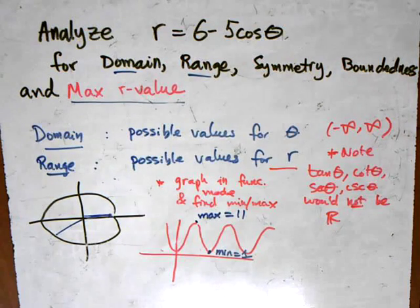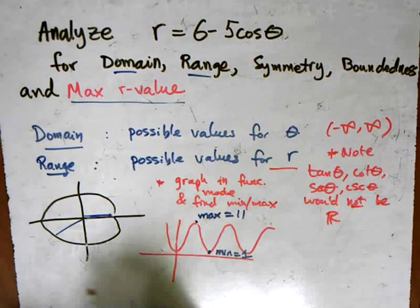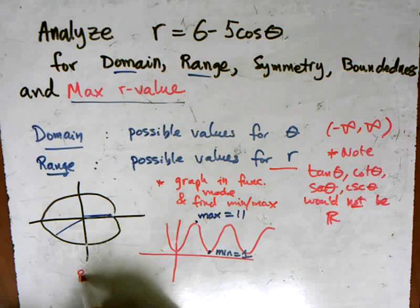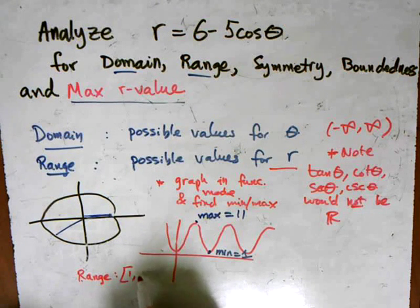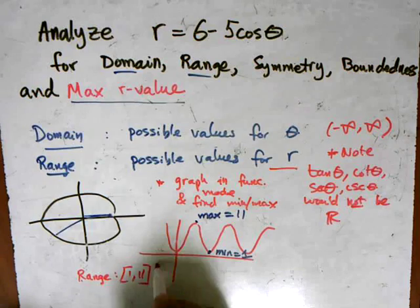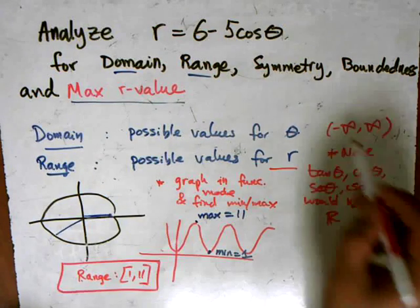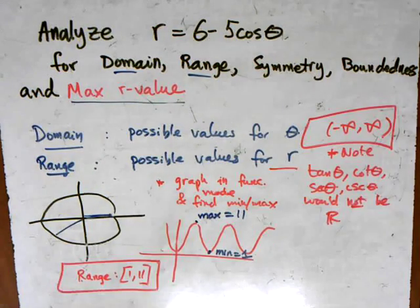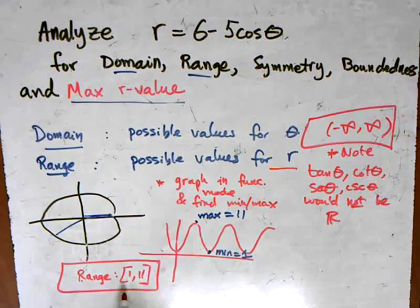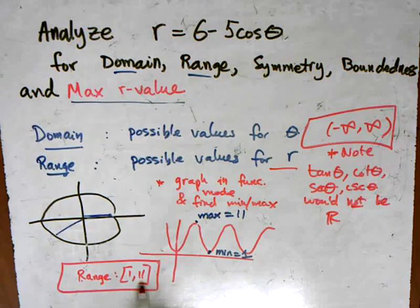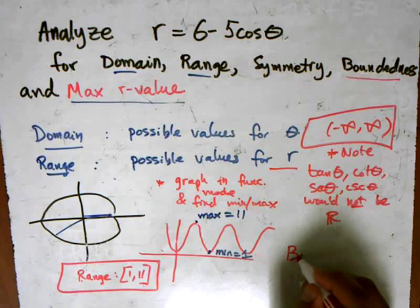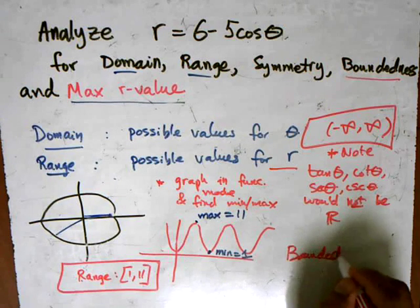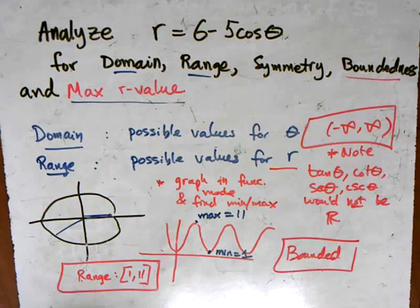And this graph here is really a graph for the y values is r. So when I have that, now I can conclude here that the range is between 1 and 11. Let me put a box around these. And because the range here has a lower bound and an upper bound, the boundedness, we can say that it's bounded in both directions, below and above.